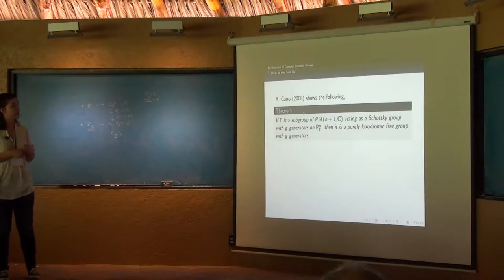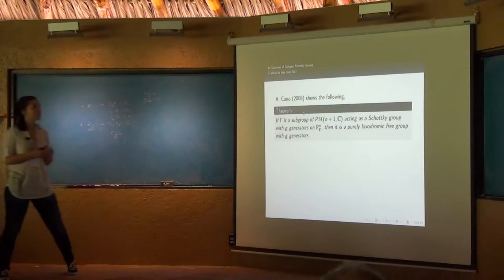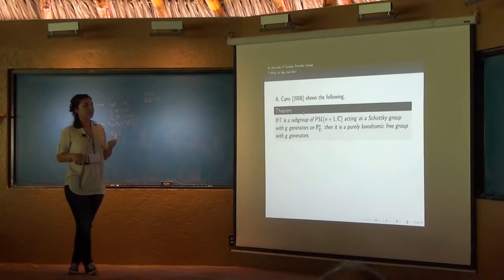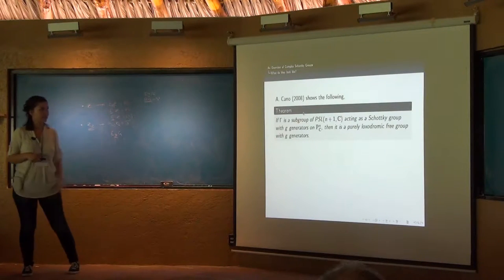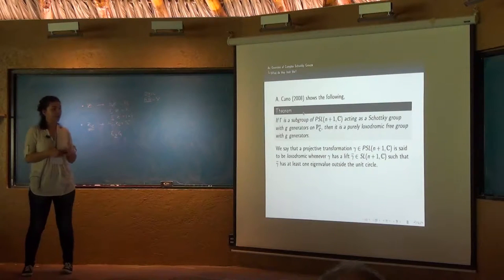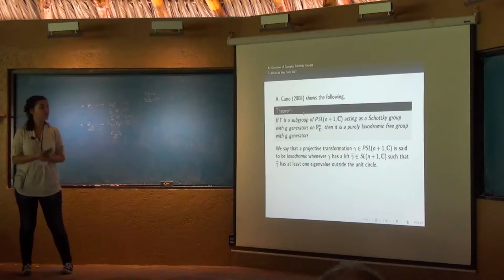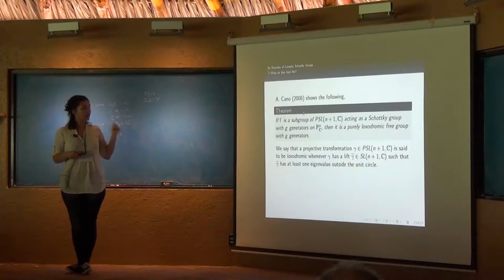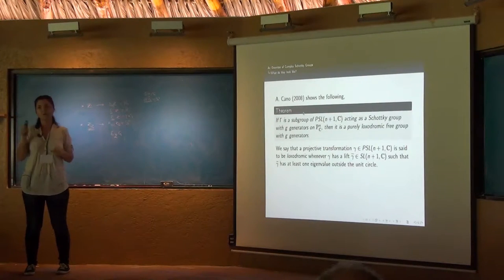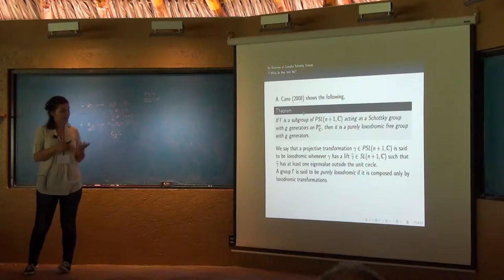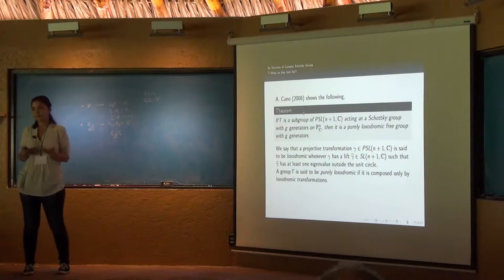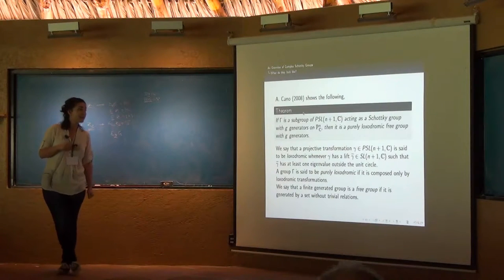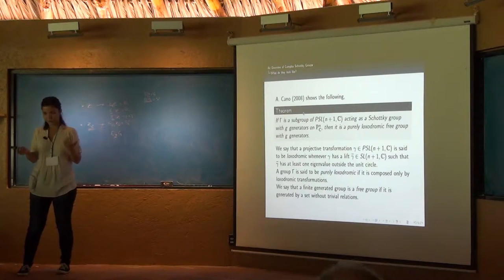This is the definition, and what do they look like? Cano also shows in 2008 that if gamma is a subgroup of PSL(n+1,C) acting as a Schottky group which is generated, then it is a pure luxodromic free group which is generated. What does it mean that bigger word there? We say that a group is said to be pure luxodromic if it is composed only by luxodromic transformations. And finally we say that a generated group is free if it is generated by the set without trivial relations.